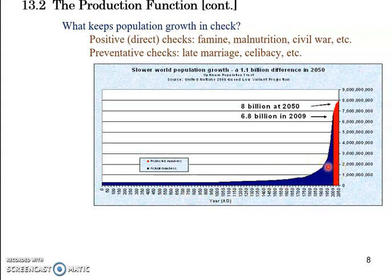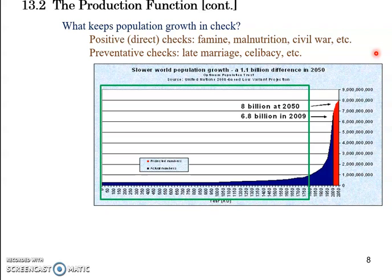This graph shows world population through history. The blue part is actual historical data up to around 2009, and the red part is projected data out to 2050. When Malthus wrote his essay in the late 18th or early 19th century, the world's population was starting to grow quickly, which made Malthus very worried that famine or starvation could be coming very soon.